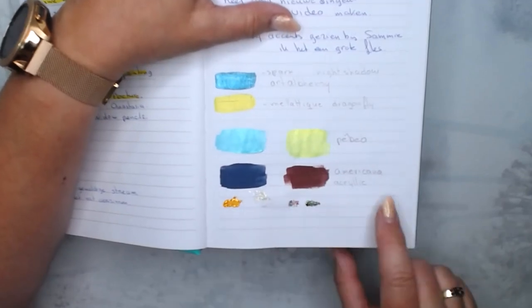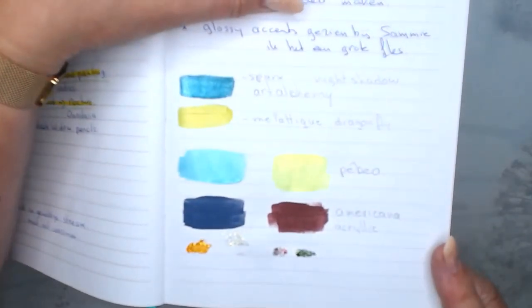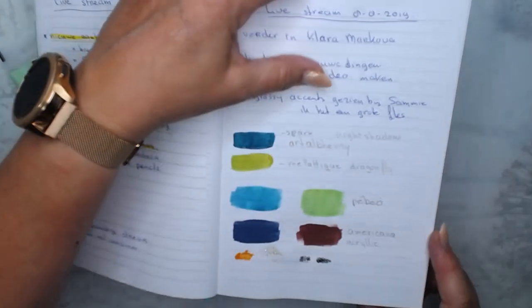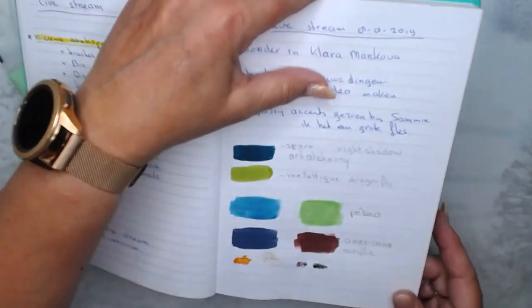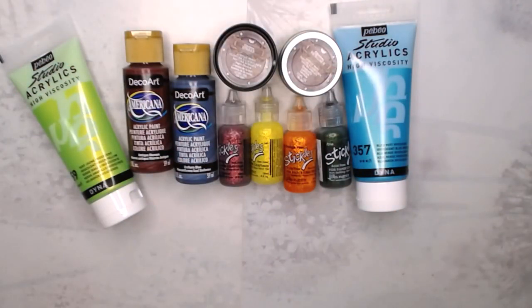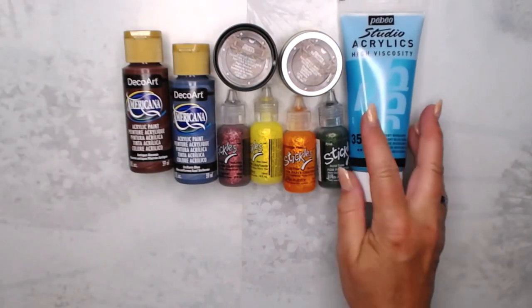So that's matte paint, so you can go over it with pencil. And these are the new Stickles. I smeared the yellow one so you cannot see that very close. But look at the shimmer of those paints. It's so nice. Yeah, happy with that.